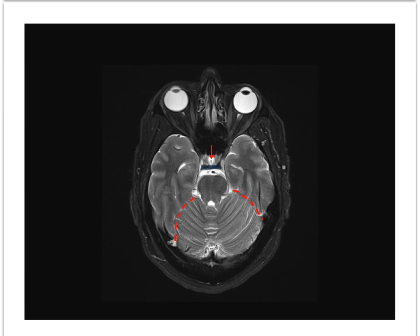The infundibulum is visible, outlined by hyperintense CSF in the suprasellar cistern. The dotted lines indicate the optic nerves within the CSF-containing optic sheaths. The anterior clinoid processes of the skull are marked in yellow, and the optic sheath complex and optic nerve course medial to the anterior clinoid processes. The internal carotid arteries also course medial to the anterior clinoid processes.